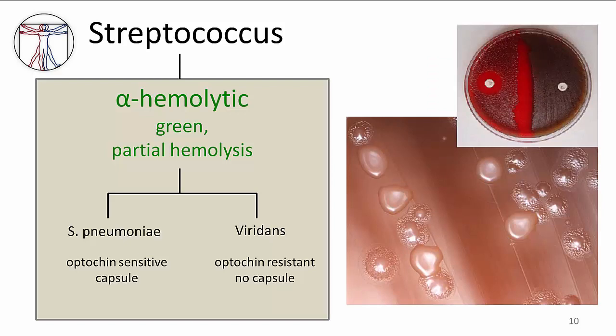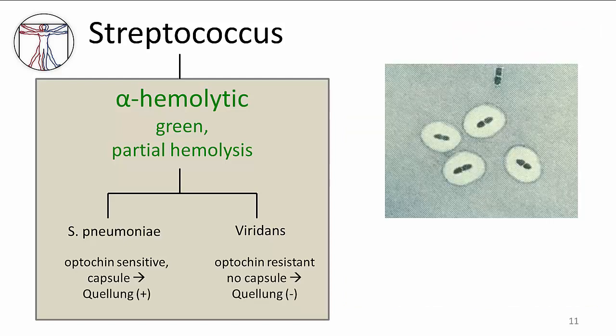Second, strep pneumoniae is unique among the strep species in that it has a capsule. This gives bacterial colonies a smooth, pearly appearance on agar plates, which can be seen here in contrast to a viridans strep species on the same plate, which has a much rougher texture to its colony. Finally, strep pneumoniae and other encapsulated organisms produce what is called a quellung reaction. The quellung reaction is a test in which an antibody solution is mixed with a sample of bacteria, allowing the antibodies to bind to the capsule. This increases the surface tension of the capsule, causing the bacteria to appear to swell. An example can be seen here with strep pneumoniae. Viridans strep do not have a capsule, so their quellung reaction will be negative.